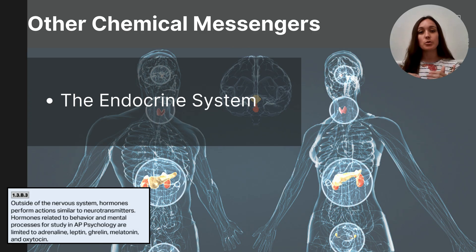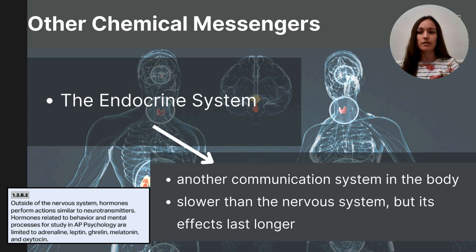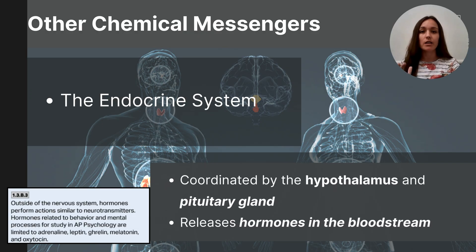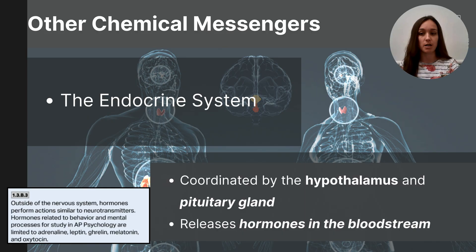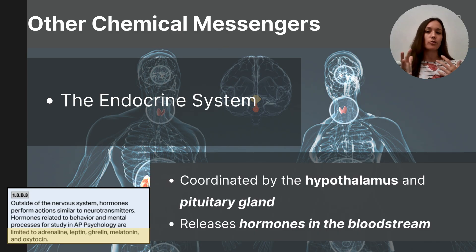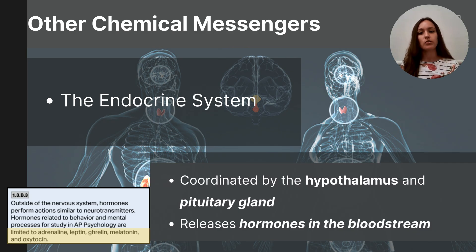So far we've focused on the nervous system as the communication system between the brain and body, but there's another system called the endocrine system. The endocrine system is not nearly as fast as the nervous system, but its effects can last longer. It is coordinated by the hypothalamus in conjunction with the pituitary gland, which coordinate to release hormones into the bloodstream. Like neurotransmitters, hormones in the bloodstream communicate specific messages to the body. Students need to know the functions of five hormones, but not necessarily all the glands or functions of the entire endocrine system.